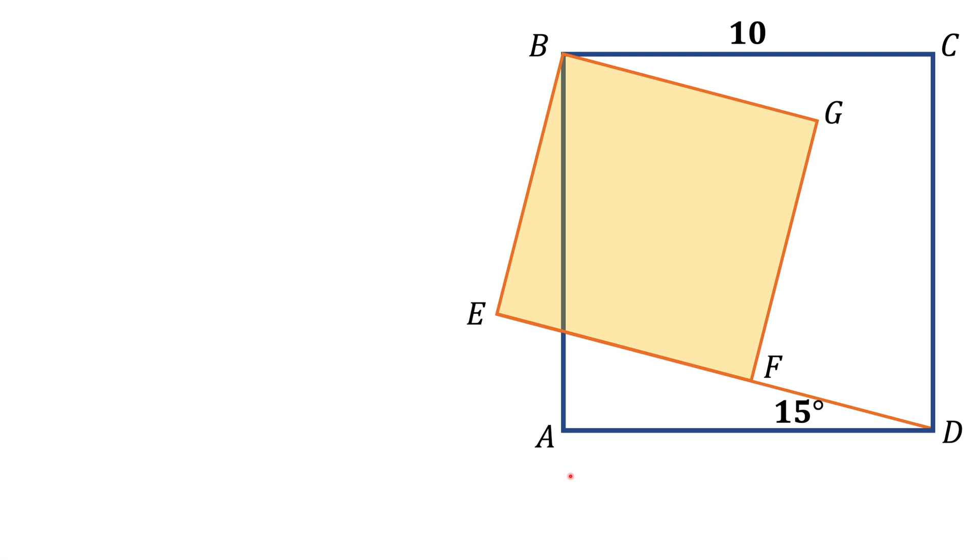Here we have two squares. The big one ABCD has a side of 10, and the smallest square BEFG, the orange square, is tilted 15 degrees with respect to the big square. We are asked to find the area of the orange square.